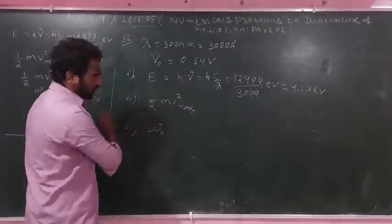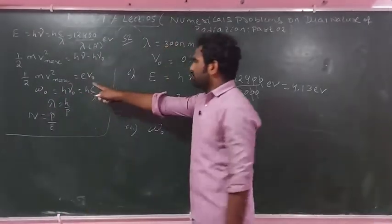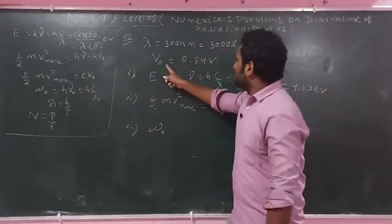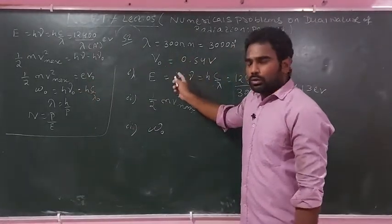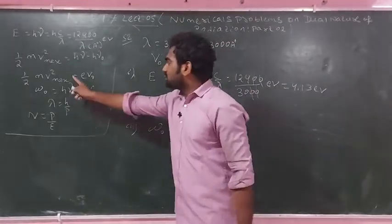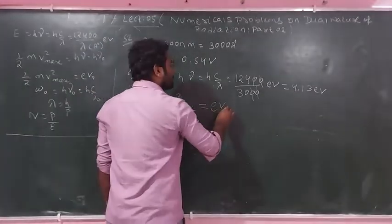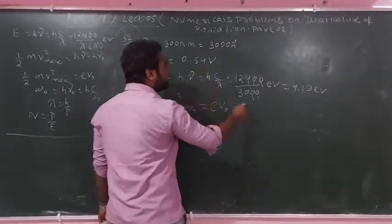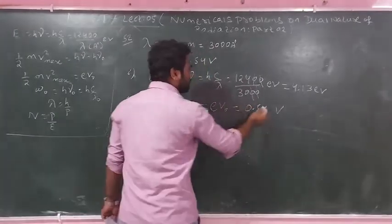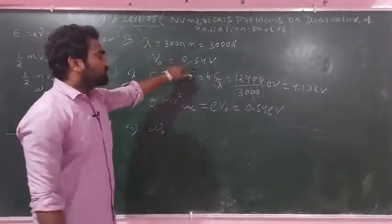Second, find maximum kinetic energy. Maximum KE = eV₀, where V₀ is the stopping potential = 0.54 volt. Therefore maximum kinetic energy = e × 0.54 = 0.54 electron volt.